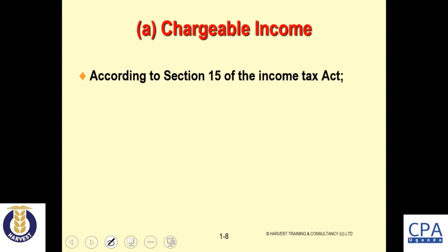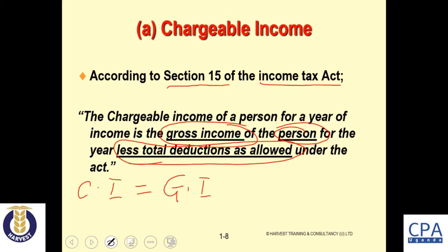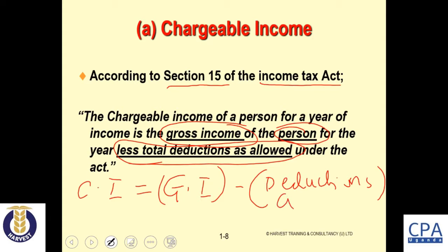According to Section 15 of the Act, chargeable income of a person for a year of income refers to the gross income of the person for that year of income, less total deductions allowed under the Act. The formula is: Chargeable Income = Gross Income − Deductions allowed under the Act. The word 'allowed' is important here.